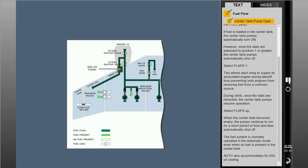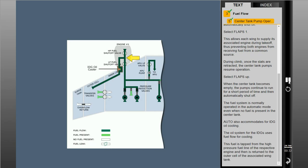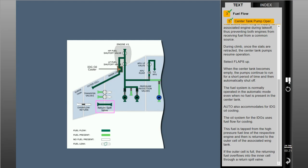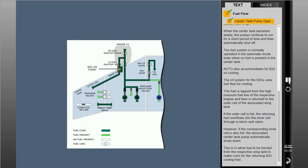Auto also accommodates for IDG oil cooling. The oil system for the IDGs uses fuel flow for cooling. This fuel is tapped from the high-pressure fuel line of the respective engine and then returned to the outer cell of the associated wing tank. If the outer cell is full, the returning fuel overflows into the inner cell through a return spill valve. However, if the corresponding inner cell is also full, the associated center tank pump automatically shuts down. This is to allow fuel to be burned from the respective wing tank to make room for the returning IDG cooling fuel.